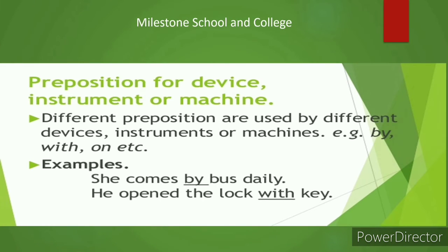Prepositions for device, instrument, or machine: different prepositions are used — 'by,' 'with,' 'on.' For example: 'She comes by bus daily' — the bus is the device or machine. 'He opened the lock with a key' — 'with' is the preposition and 'key' is the instrument. So before a machine, device, or instrument, we write down the appropriate preposition.